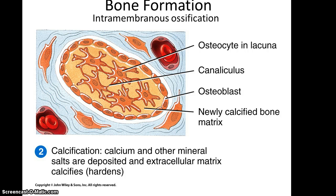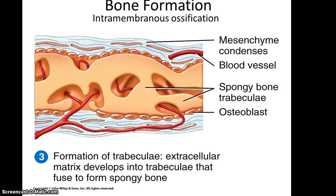We will also begin to see some of the structures we expect to see in bone tissue. Lacunae will form, and within them the osteoblasts will differentiate into osteocytes. There will also be canaliculi forming between the lacunae. This will begin to spread and grow within the mesenchymal sheet.